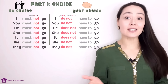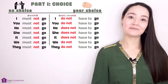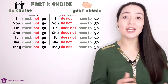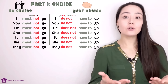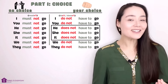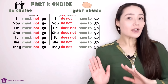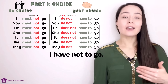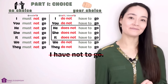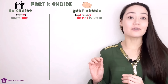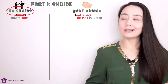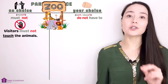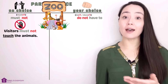Things change in the negative. I must not go, you must not go, he/she/it must not go — the forms don't change. I do not have to go, you do not have to go, but he/she/it does not have to go. Remember 'does.' The correct structure is: subject + do not have to + base verb. We do not say 'I haven't to go.' In the negative, must not still means no choice. At the zoo: visitors must not touch the animals. You must not do it — it's dangerous.